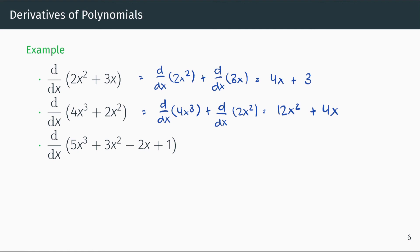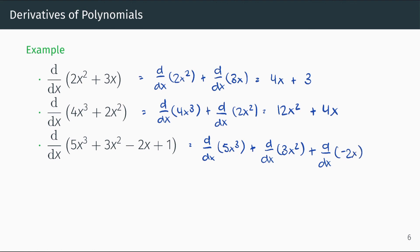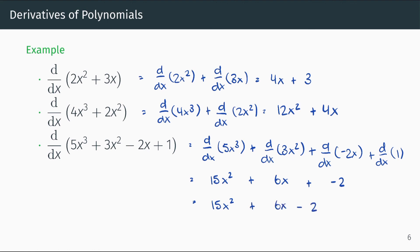And our last example: the derivative of 5x cubed plus 3x squared minus 2x plus 1. The derivative of 5x cubed is 15x squared. The derivative of 3x squared is 6x. The derivative of negative 2x is negative 2. And the derivative of 1 is 0. So the answer is 15x squared plus 6x minus 2. Thank you.